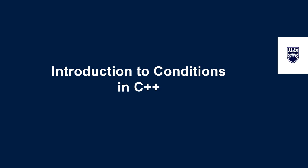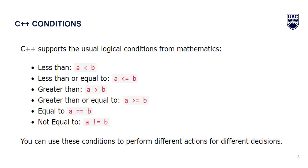Let's start by giving a brief introduction about conditions in C++ programming. C++ supports the usual logical conditions from mathematics. So if we have two variables A and B, we can compare their values: A less than B, A less than or equal to B, A greater than B, A greater than or equal to B, A equal to B, or A not equal to B.